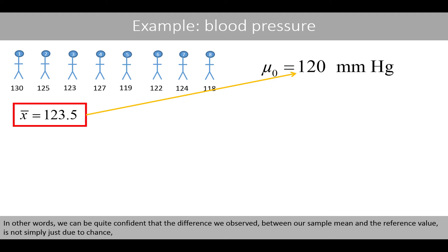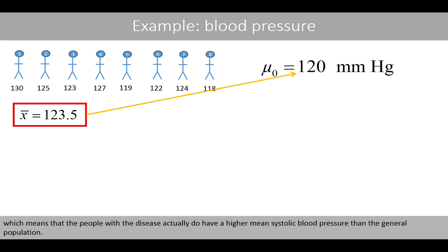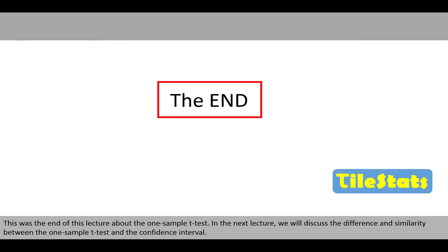In other words, we can be quite confident that the difference we observed between our sample mean and reference value is not simply due to chance, which means that the people with the disease actually do have a higher mean systolic blood pressure than the general population. This was the end of this lecture about the one-sample t-test. In the next lecture, we'll discuss the difference and similarity between the one-sample t-test and the confidence interval. Thanks for watching.